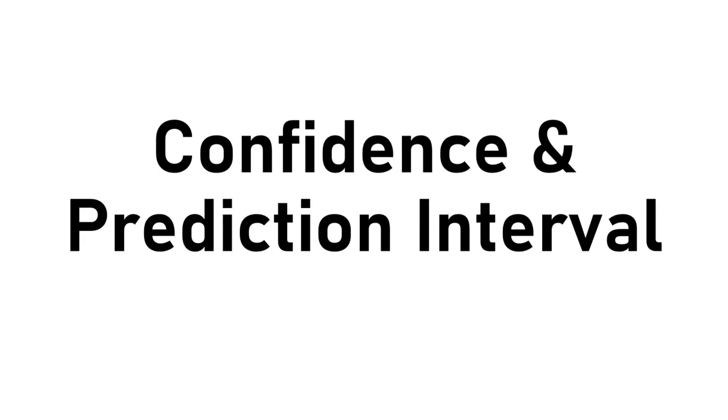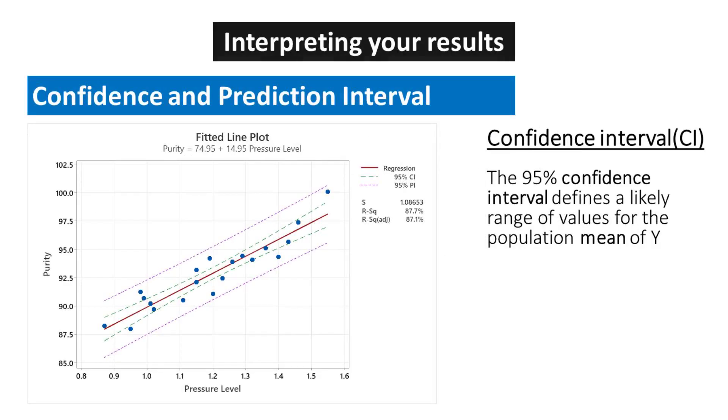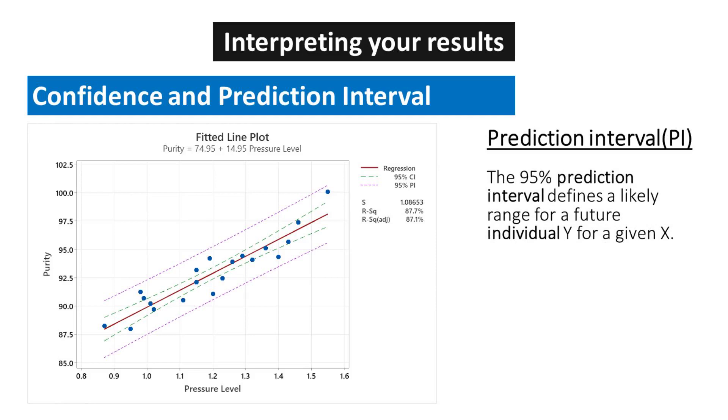Confidence and prediction interval. The 95% confidence interval defines a likely range for a future individual Y for a given X.